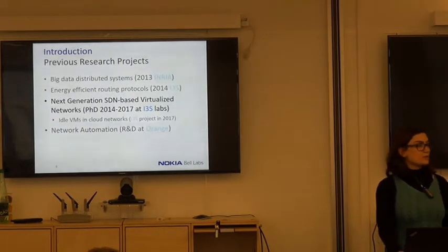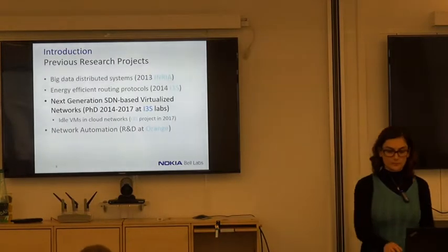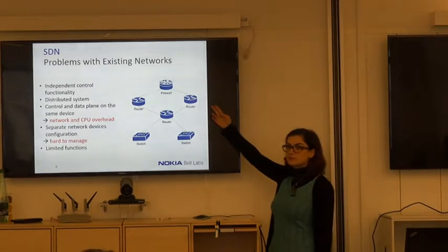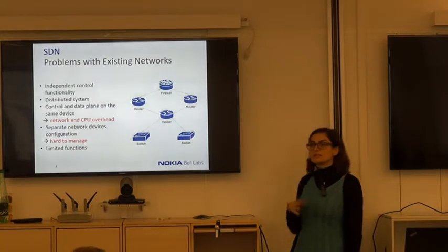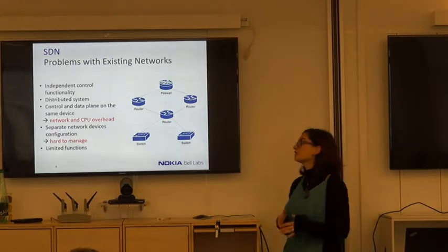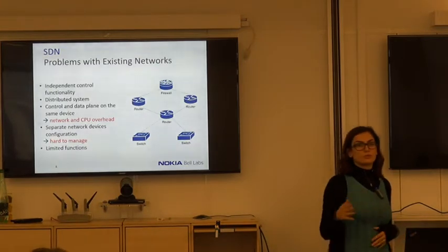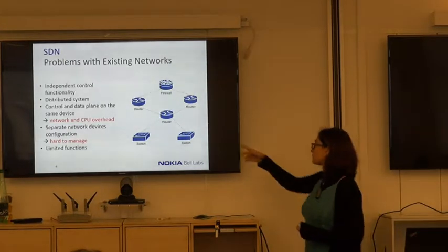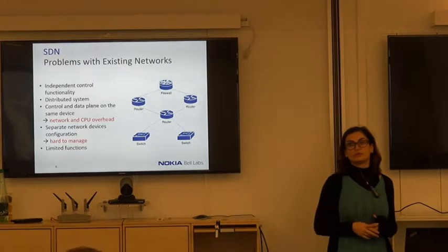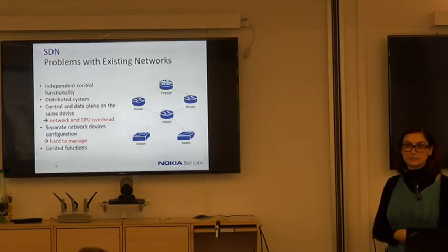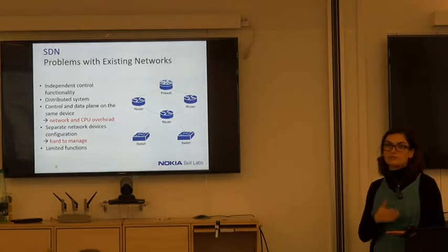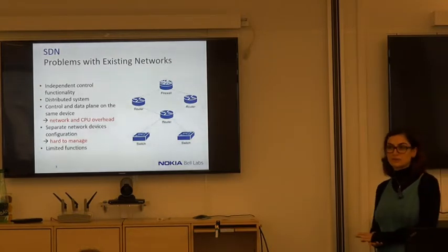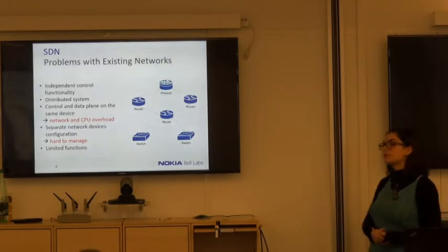First, I'll describe why we need SDN. The problem with existing networks is that we have multiple types of network devices, each with independent control functionality — switches, routers, firewalls. Routers route data between different networks, switches operate within the same network. In this distributed system, routers must work together to send information to each other, requiring intelligence and forwarding — the control plane and data plane — on the same device, which can cause network and CPU overhead.